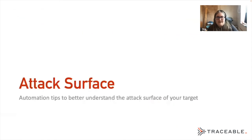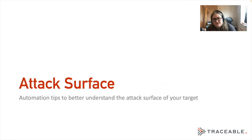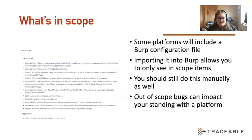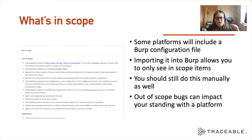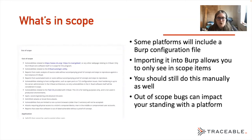The way a blue team thinks about their attack surface and doing things like an inventory, I'm thinking about their attack surface — starting with what's in scope. Because I do a lot of bug bounties, I often get a Burp configuration file that I can import into Burp, and it will only show me in-scope items. Automatically, I just don't see anything out of scope. This is a great trick that makes sure I'm not constantly thinking 'is that API endpoint in scope?'